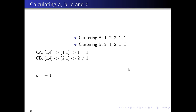Continuing with index one and five. The index (1, 5) corresponds to the pair (2, 2) — wait, (1, 1) — in cluster A, and the pair (2, 1) in cluster B. The pair in cluster A is equal, and the pair in cluster B is not equal. So C increases by one again.